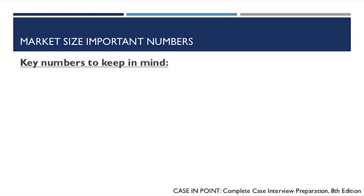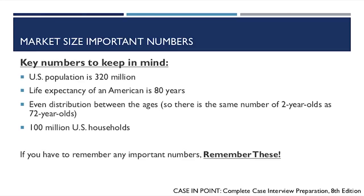A key obstacle in market sizing is lacking basic data. So some key numbers to keep in mind: the US population is 320 million. If you're from another country and taking interviews there, know your country's basic demographic numbers. Life expectancy of an American is 80 years with an even age distribution — meaning there are the same number of 2-year-olds as 72-year-olds. There are 100 million US households. If you remember any numbers, remember these.